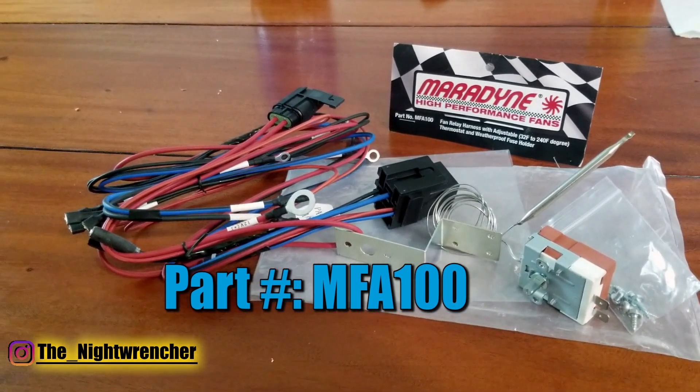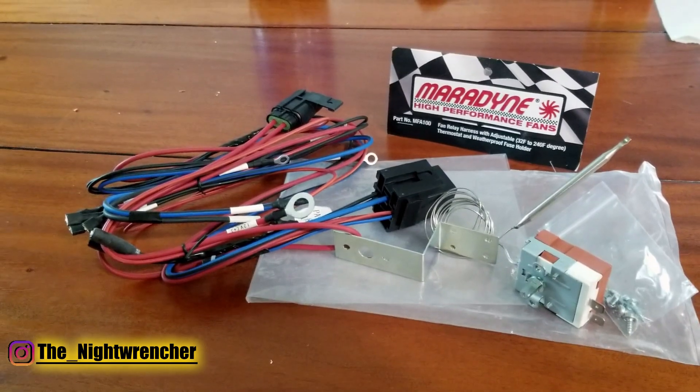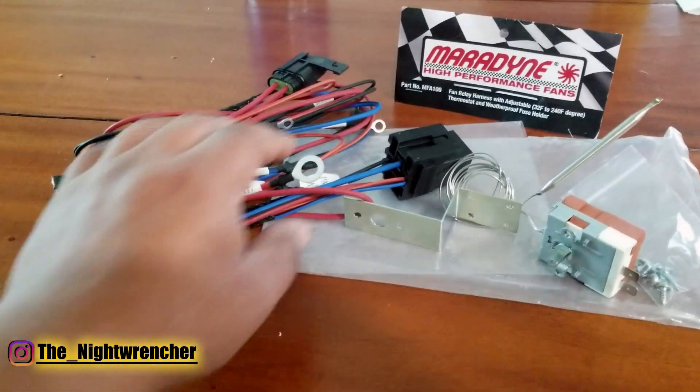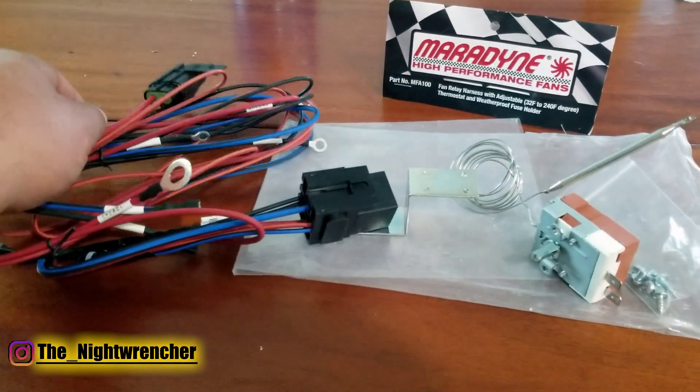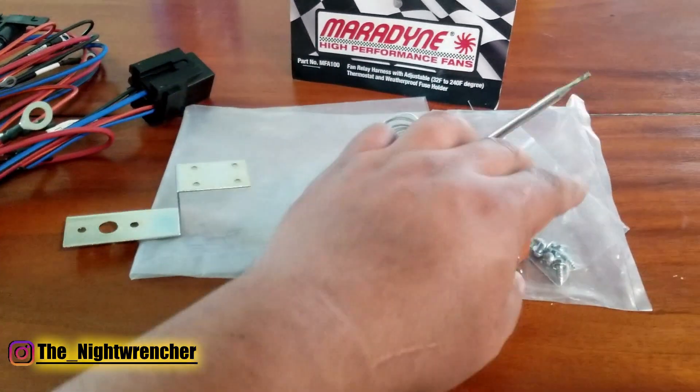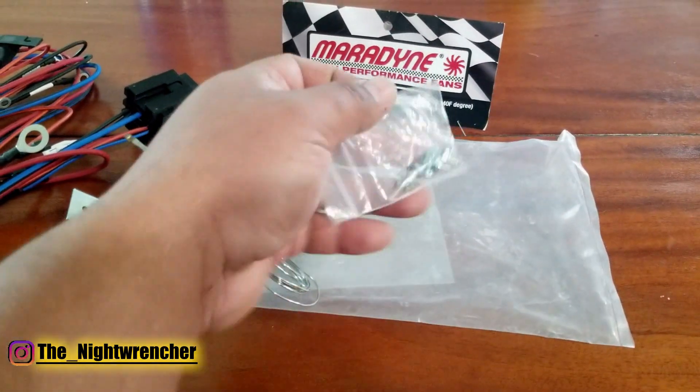This is a non-invasive kit which means you don't have to do anything to your existing wiring. As long as you know how to set up power and ground the rest should be pretty easy. This kit comes with a relay harness, fuse holder, mounting bracket for the adjustable thermostat, the sensing bulb, and a little baggie of hardware.